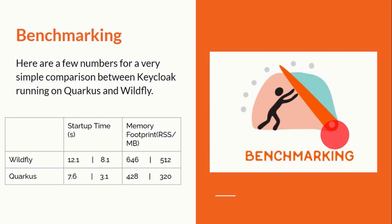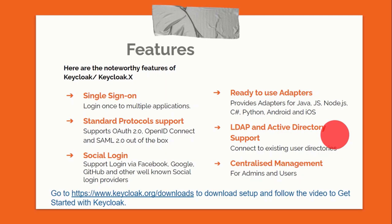For memory footprint measured in RSS per MB, Wildfly uses 646 MB and Quarkus just 428 MB. For the second time, it is drastically reduced to 320 MB. Before we go further to see how to get started with KeycloakX, here are the salient features of Keycloak.